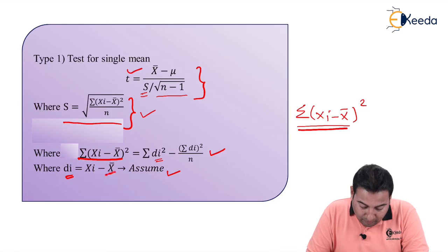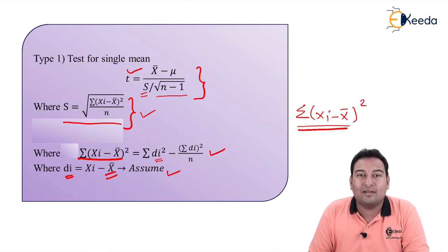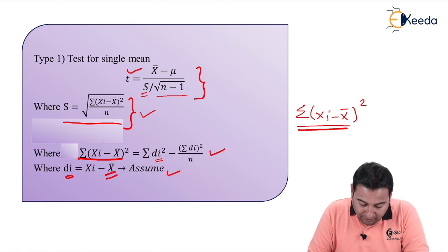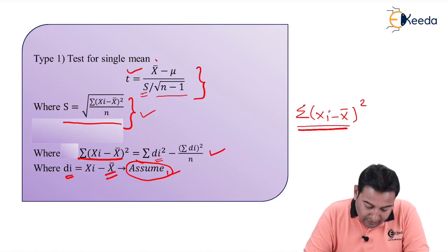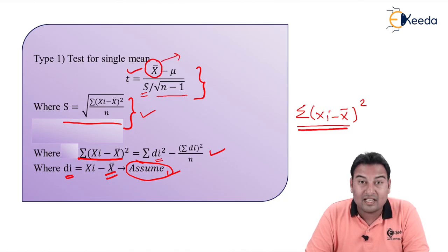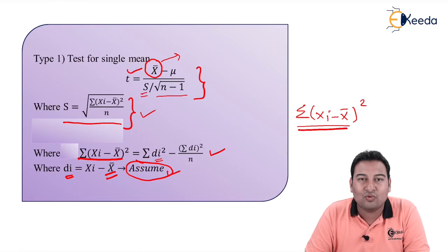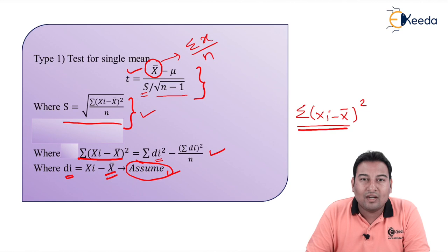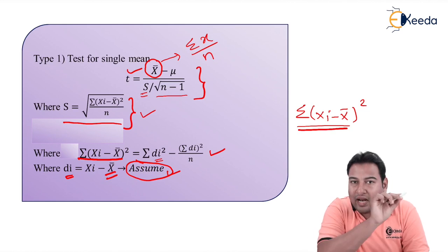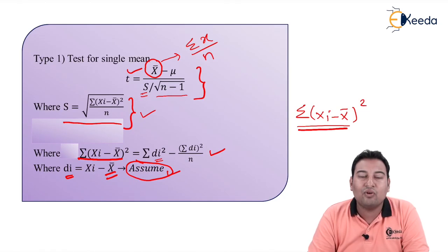Now, this X bar in the S formula is your assumed mean — that means you can assume anything. But the X bar in the formula of T is not assumed; it is actual. Actual means you need to calculate it. The formula is summation of X upon N — that means we add all the values of X and divide by N.